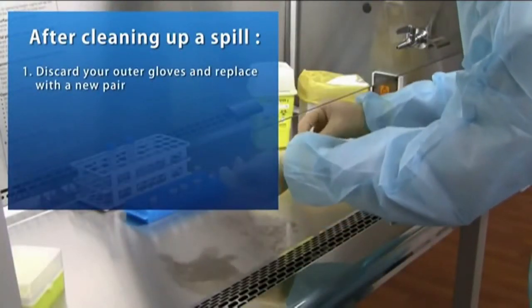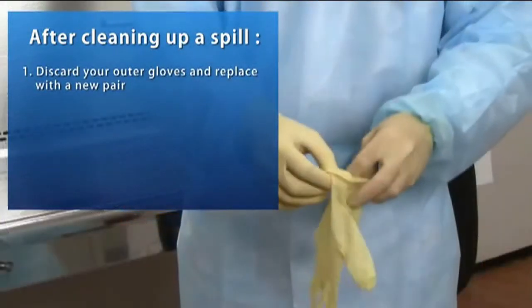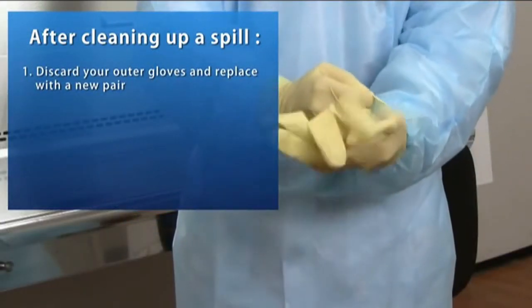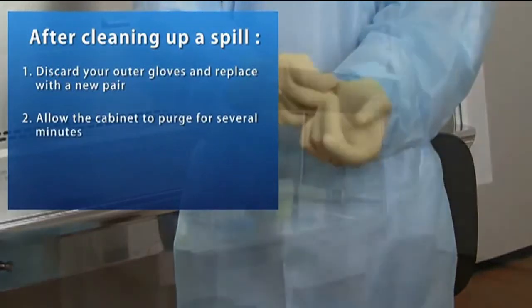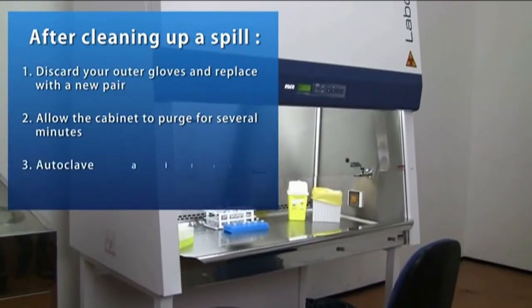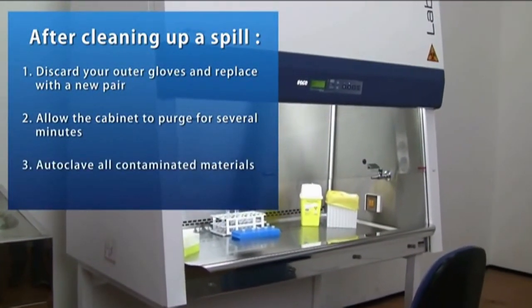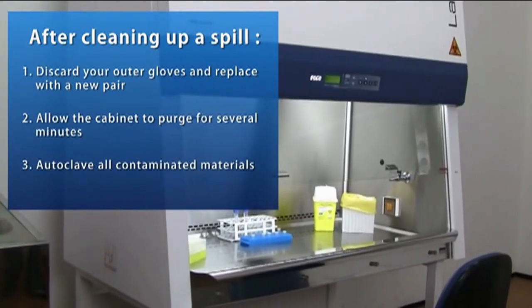After cleaning up a spill, discard your outer gloves and replace them with a new pair. Allow the cabinet blower to run purging the work zone for several minutes. And be sure to autoclave all contaminated materials. Take care.